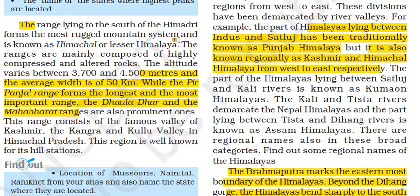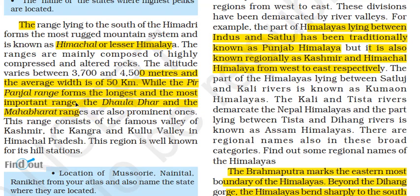After the Great Himalayas, the range lying to the south of Himadri is the most rugged mountain system, known as Himachal or the Lesser Himalayas. These are highly compressed and altered rocks with altitude ranging from 3,700 to 4,500 meters and an average width of 50 kilometers. Pir Panjal is the longest and most important range. Other prominent ranges include Dhauladhar and Mahabharat ranges. This region consists of the famous Kashmir Valley, Kangra Valley and Kullu Valley in Himachal Pradesh, and is known for its hill stations.